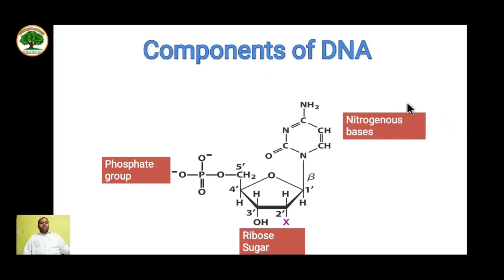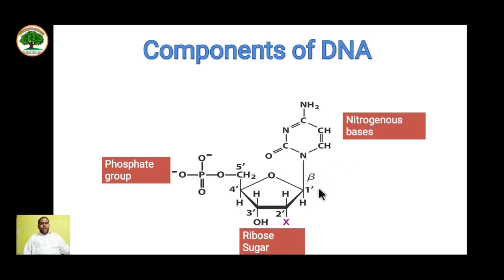DNA has three major components: nitrogenous bases, ribose sugar, and phosphate group. The ribose sugar present in DNA is a pentameric sugar. The nitrogenous base is added to the number one carbon and the phosphate group is attached to carbon number five.